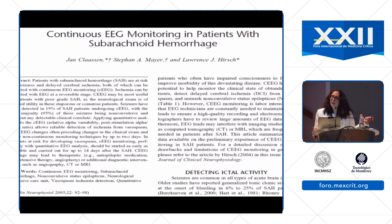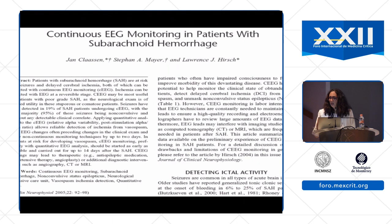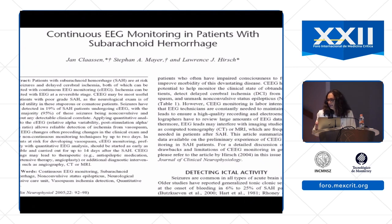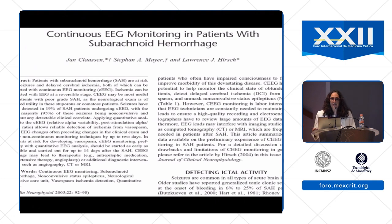Original studies on EEG monitoring in subarachnoid hemorrhage focused on seizures, since these patients are at high risk for electrographic — not necessarily clinical — seizures. But what people started noticing was that the EEG patterns were changing. There are four patterns: alpha (normal), beta (also normal), and the slower rhythms theta and delta, which are seen with brain injury.